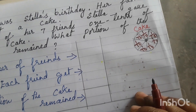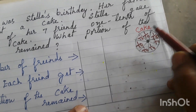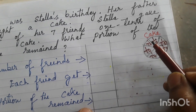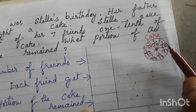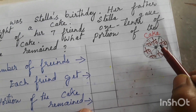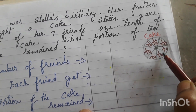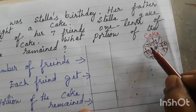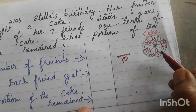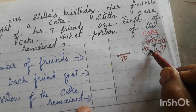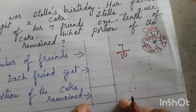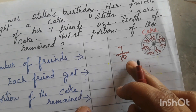Each friend gets one by ten. Totally seven friends are there. So we count: one, two, three, four, five, six, seven — that gives seven by ten. Seven by ten portion of the cake is distributed.